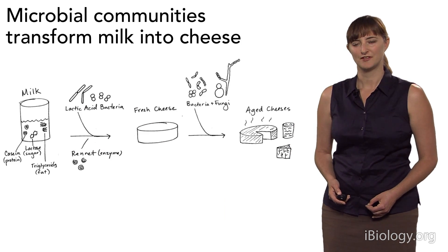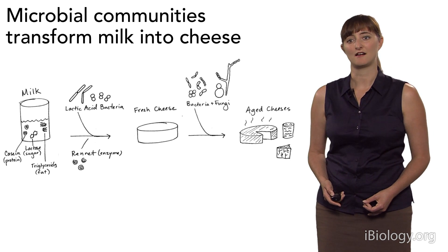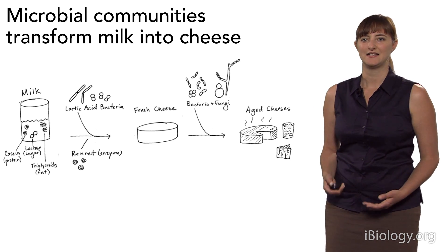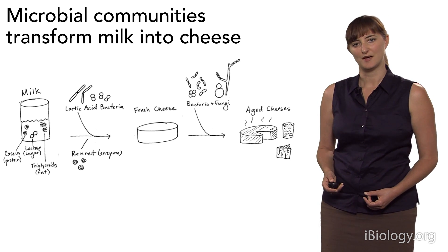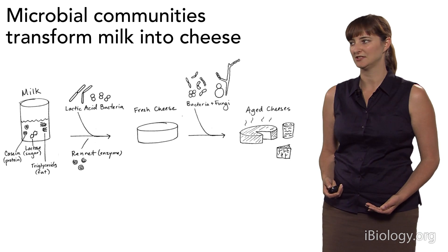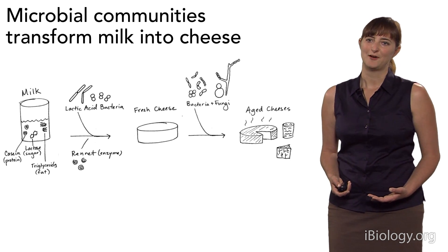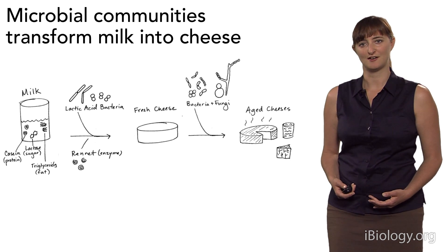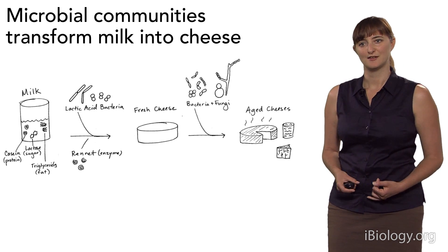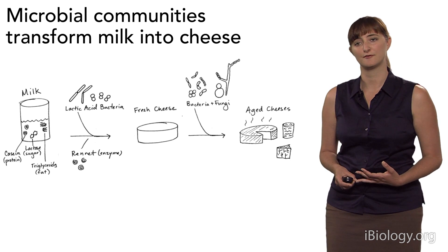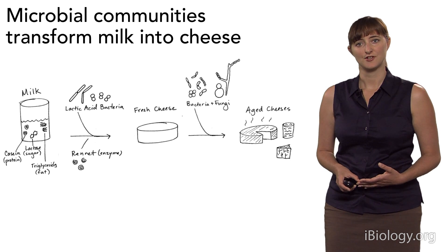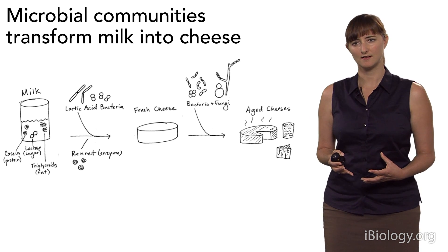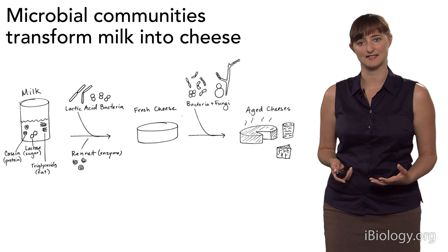In the case of cheese, there are two really important steps in cheesemaking where microbial communities are important. Microbes are responsible for the complete transformation of milk into cheese. We start with milk from a dairy animal — cow, goat, or sheep — and from the perspective of a microbe, milk is just a great source of food: protein in the form of casein, sugar in the form of lactose, and fat in the form of different kinds of triglycerides.